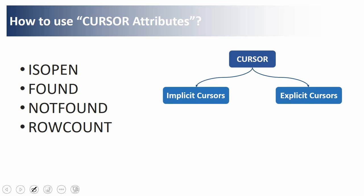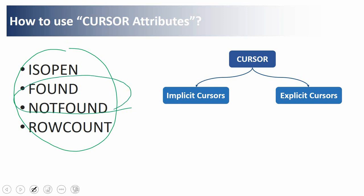All four attributes are applicable for both explicit and implicit cursors, but with one key difference. For explicit cursors, which are defined and managed by the developer, all four attributes can be used. For implicit cursors, which are automatically opened, executed, and closed by Oracle, FOUND and NOT FOUND are not applicable because by the time you check them the cursor is already closed, so they always return false.